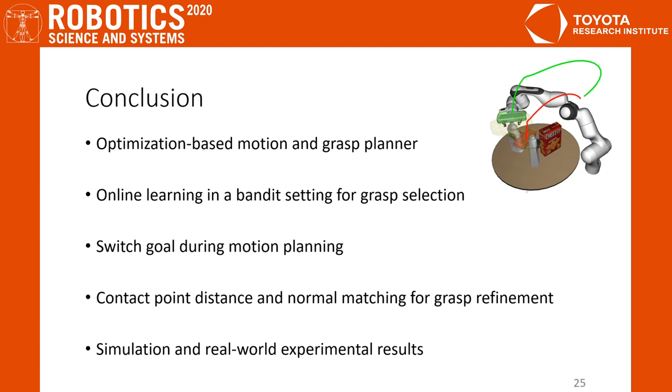In conclusion, we propose an optimization-based motion grasp planner OMG for joint planning. We apply online learning techniques to select goal configuration and introduce a grasp refinement algorithm to update goals. Thank you for watching.